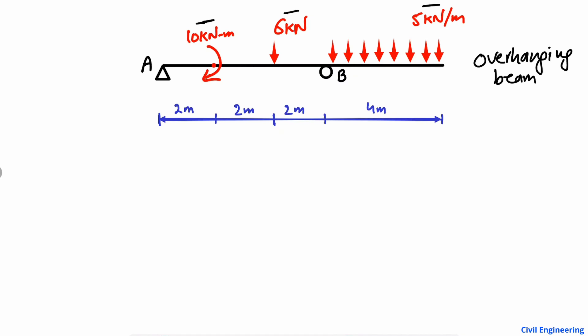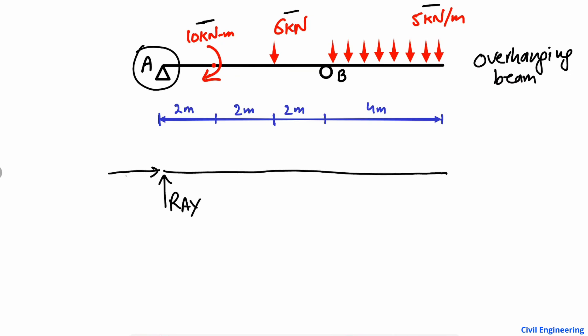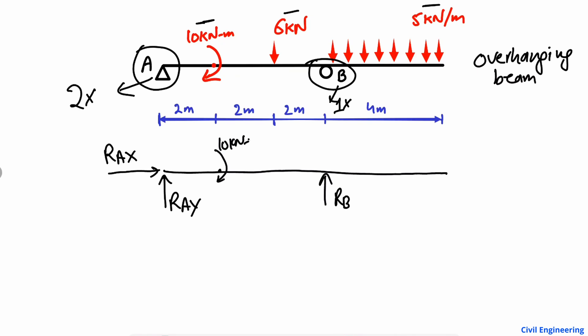To find out the support reactions, first we will draw the free body diagram. The beam is shown as a horizontal line. At the hinge support, it can take both vertical reaction RAy and horizontal reaction RAx. The roller support can only take the vertical reaction RB. The loads acting on the beam are: the 10 kilonewton-meter internal moment, the 6 kilonewton point load, and the 5 kilonewton per meter uniformly distributed load.